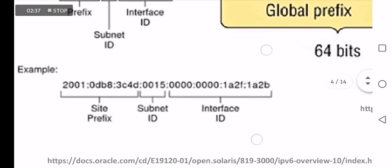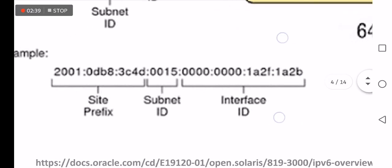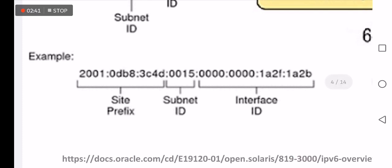For example, this is a unicast address starting with 2000:01 and ending with the interface ID. This address is composed of three parts: the left 32 bits represent the site prefix, then 16 bits for the subnet ID, then 64 bits for the interface ID.